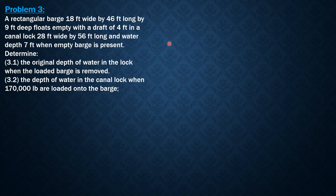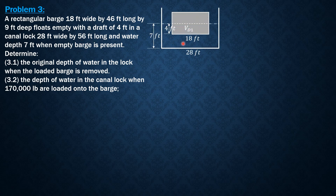Let's draw the figure first when the empty barge is present. The canal lock is 28 feet wide, perpendicular to the screen is 56 feet, and the water depth is 7 feet when the empty barge is present. The empty barge has a draft of 4 feet, a width of 18 feet, and perpendicular to the board it is 46 feet long. From here we can compute the displacement volume V_d1.